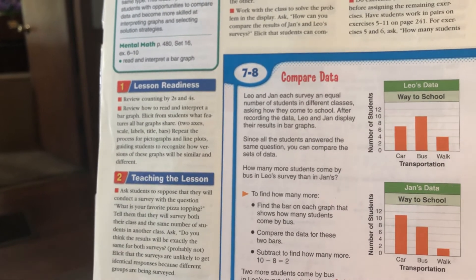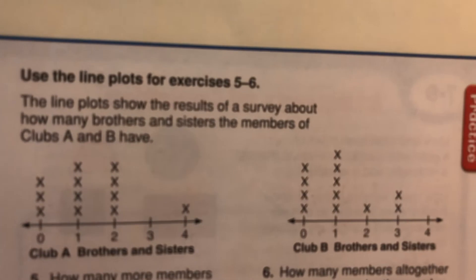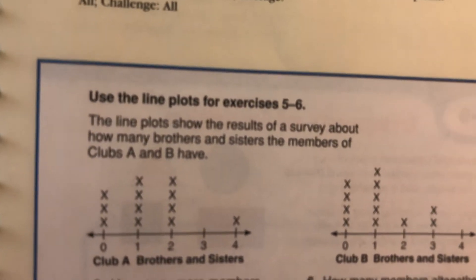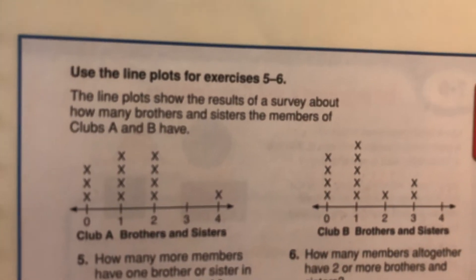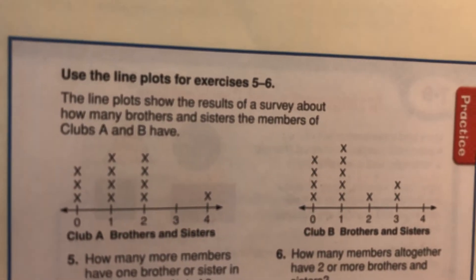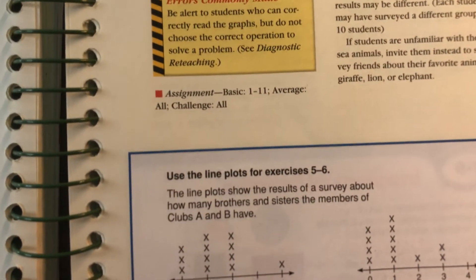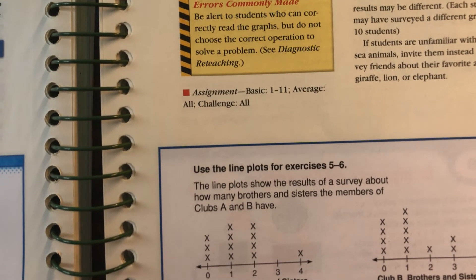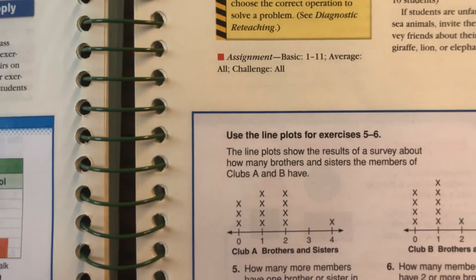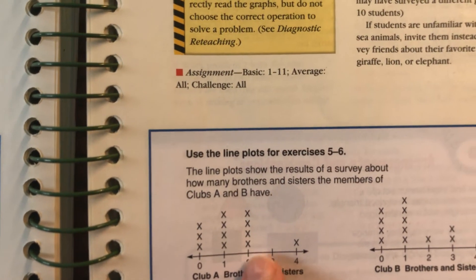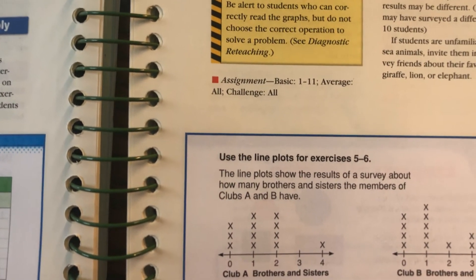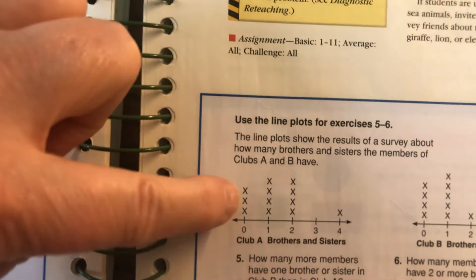That's one way you can compare information. Another way would be in a line plot. Say you had a line plot that shows information from the brothers and sisters of people who are members of Club A, and brothers and sisters of people who are in Club B. If you were asked to answer a question like number 5 — how many more members have one brother or sister in Club B or A — you have to look at the two charts, using the information that is in one, to compare them.